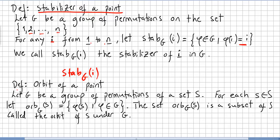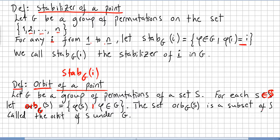We now introduce the concept of the orbit of a point. Let g be a group of permutations of a set s. For each s in s, let the orbit of s under g be the set of phi of s such that phi is in g. This subset of s is called the orbit of s under g.